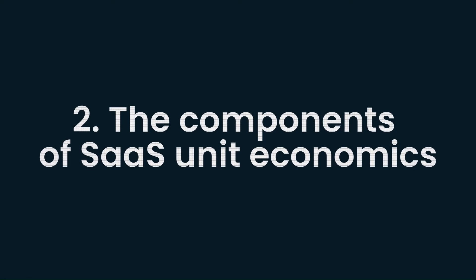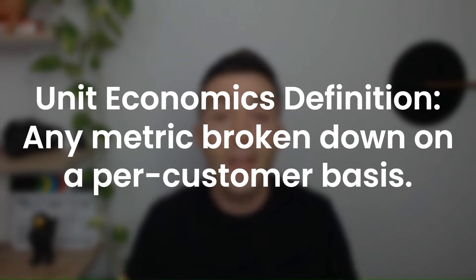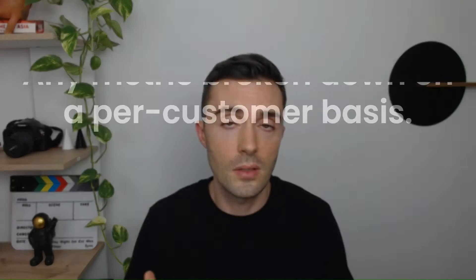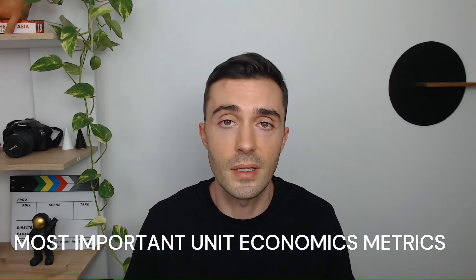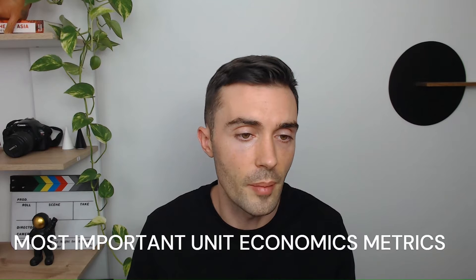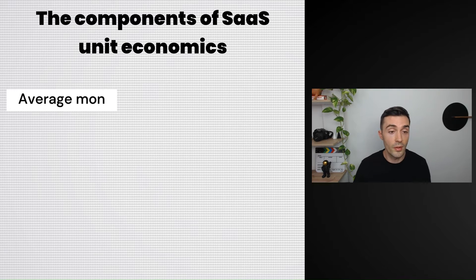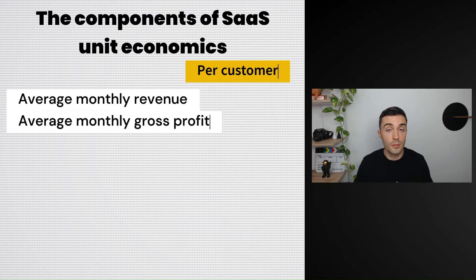Section two: the components of SaaS unit economics. Whenever you're thinking about unit economics, it's any metric broken down on a per-customer basis. The most important metrics include your average monthly revenue per customer, and your average monthly gross profit per customer — how much profit you make from that revenue after subtracting all your direct costs.